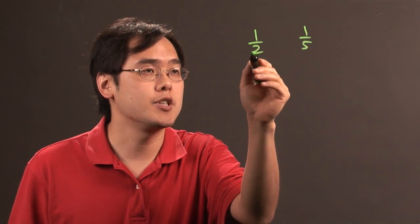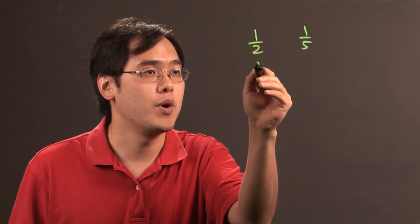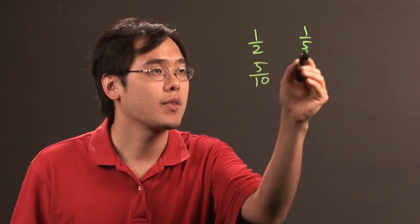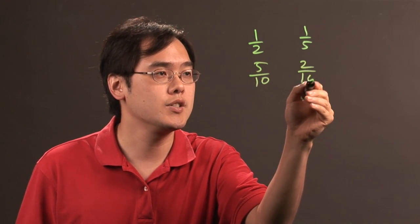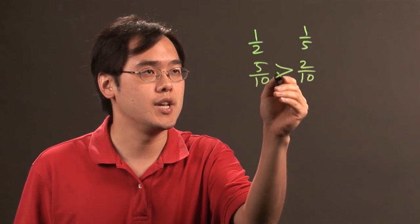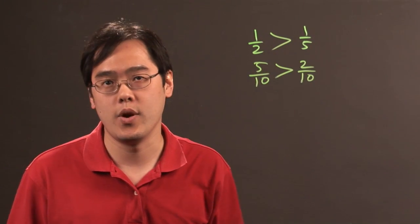So the common denominator between two and five is ten, so one-half is five-tenths, one-fifth is two-tenths, and as you can tell, five-tenths is larger than two-tenths, so that's why one-half is larger than one-fifth.